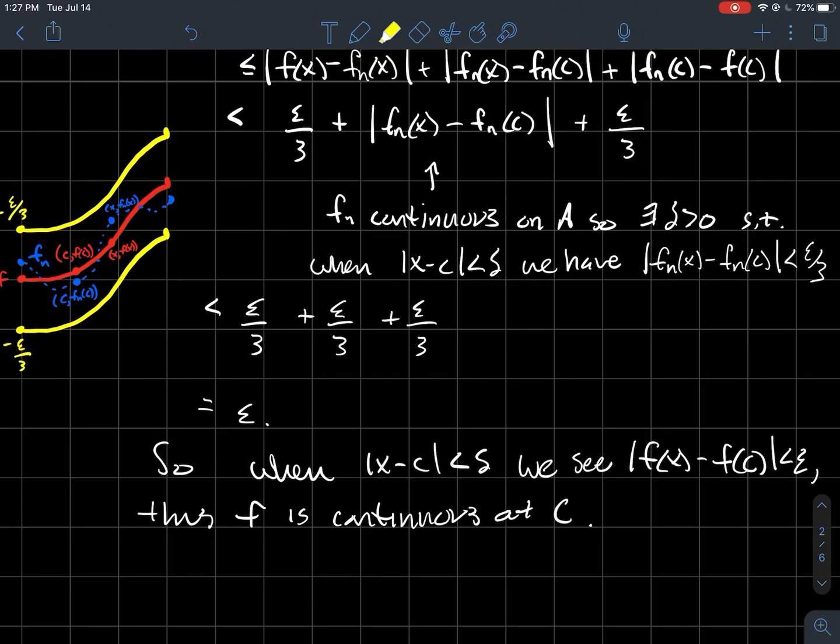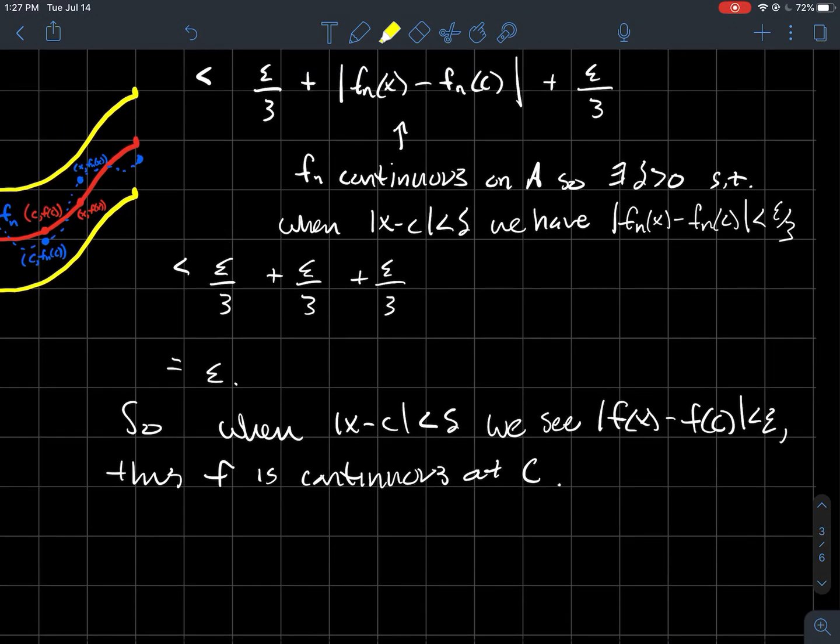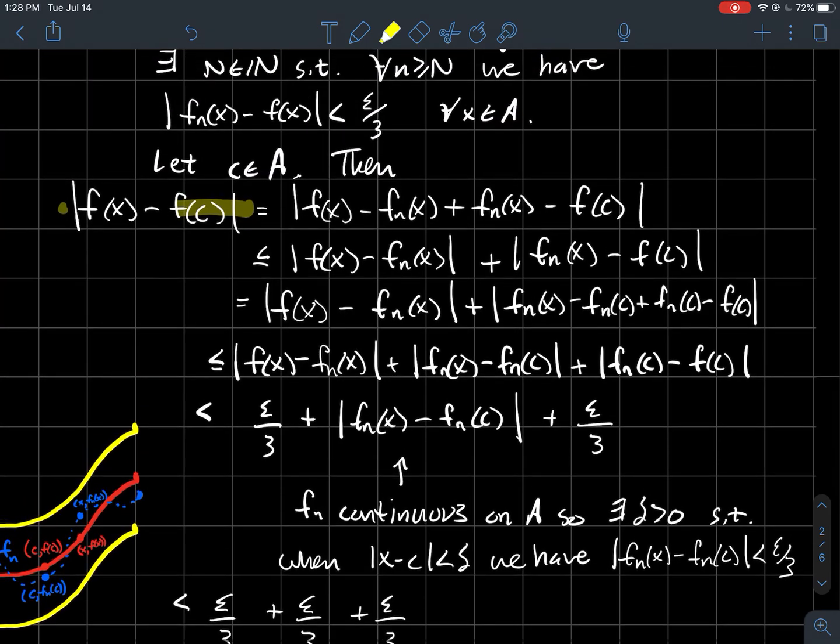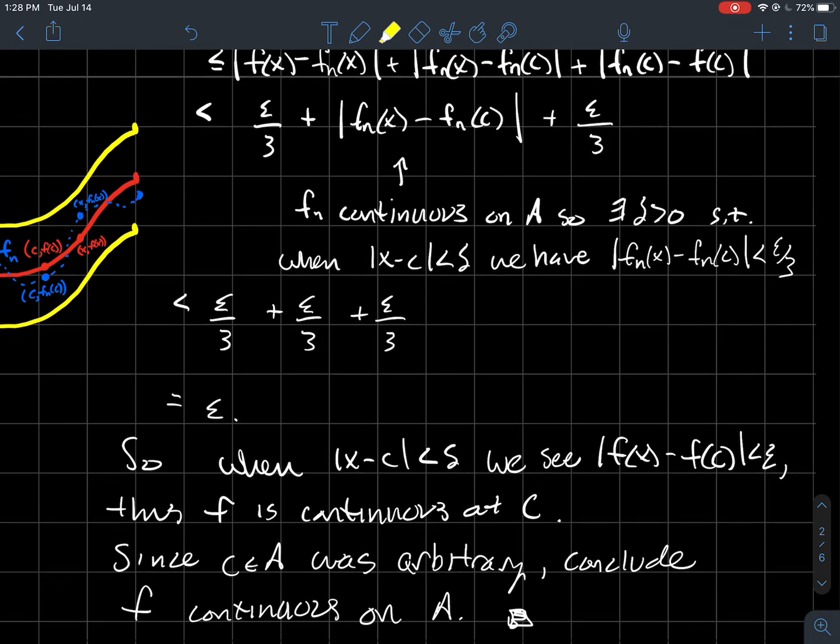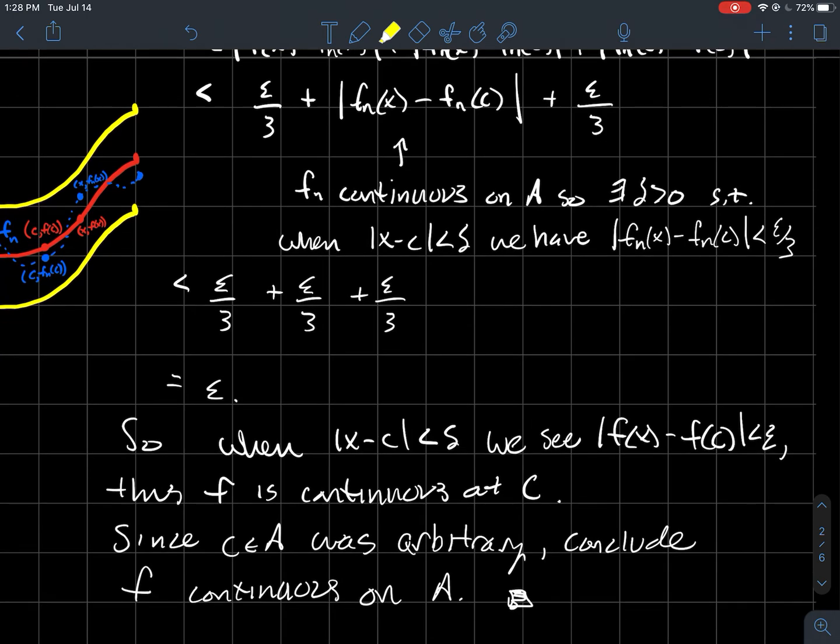Now the last thing that we might do, I'm not sure what's going on here, there. So thus, f is continuous at c. And of course, since c was arbitrary, so maybe back up here, just let c be any point in A, and this idea just worked. So since c was arbitrary in A, we can conclude that f is continuous on the whole interval A.